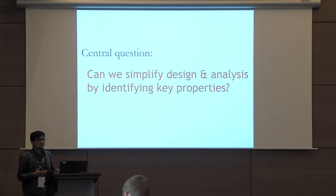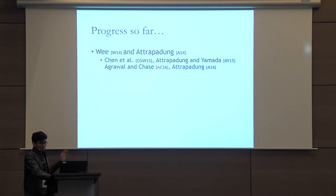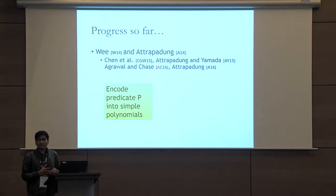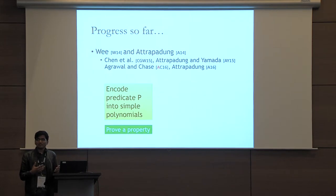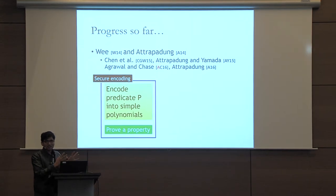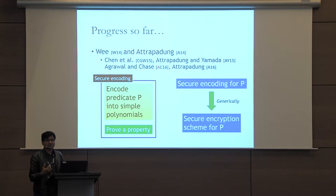Can we identify the key properties that are needed to enable the use of cryptographic tools and techniques? This problem was first formally studied by Wee and Attrapadung, and later on by several other papers. At a high level, these papers provide a way to encode the predicate into some simple polynomials. Then you prove a property about these polynomials, which could be either information theoretic or computational. As a result, you get a secure encoding, and these papers provide a way to convert any secure encoding into a secure encryption scheme for the same predicate.